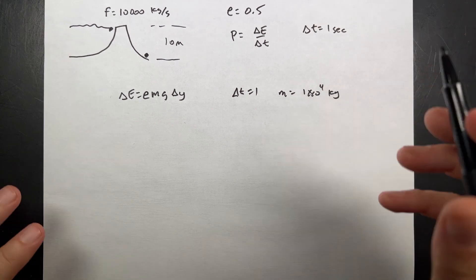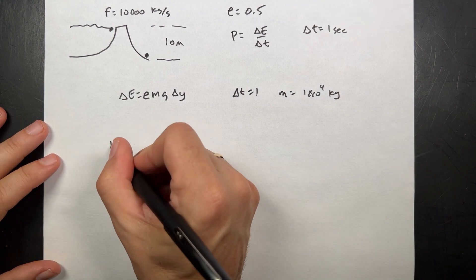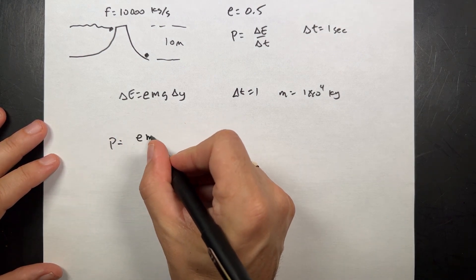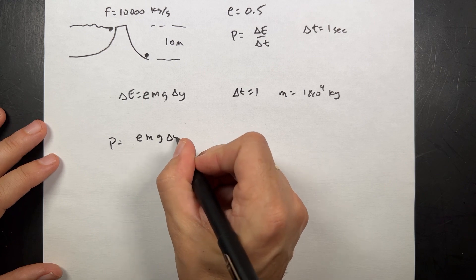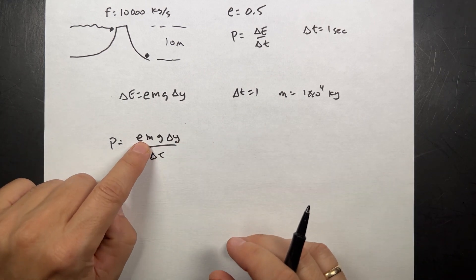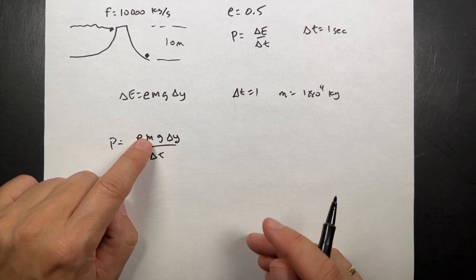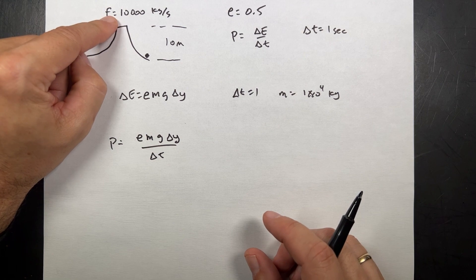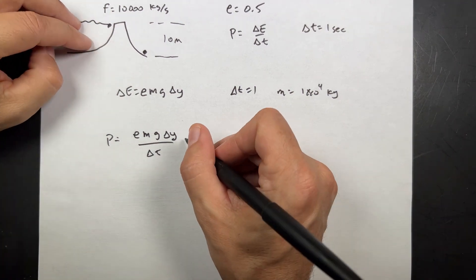So now it's actually not such a big problem. I can do the power. Power is going to be the change in energy, E M G delta Y over the time delta T. And in fact, if you wanted to, you could do it for any time. M over delta T is F, right? So that's the same thing. Let's just plug it all in.